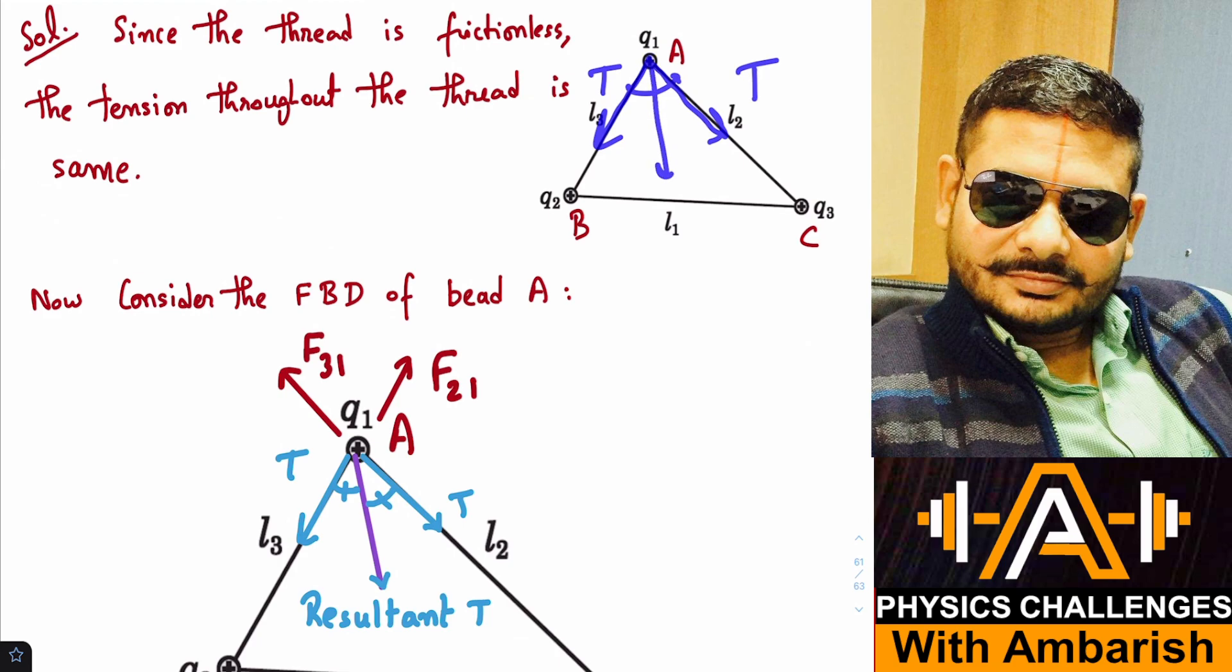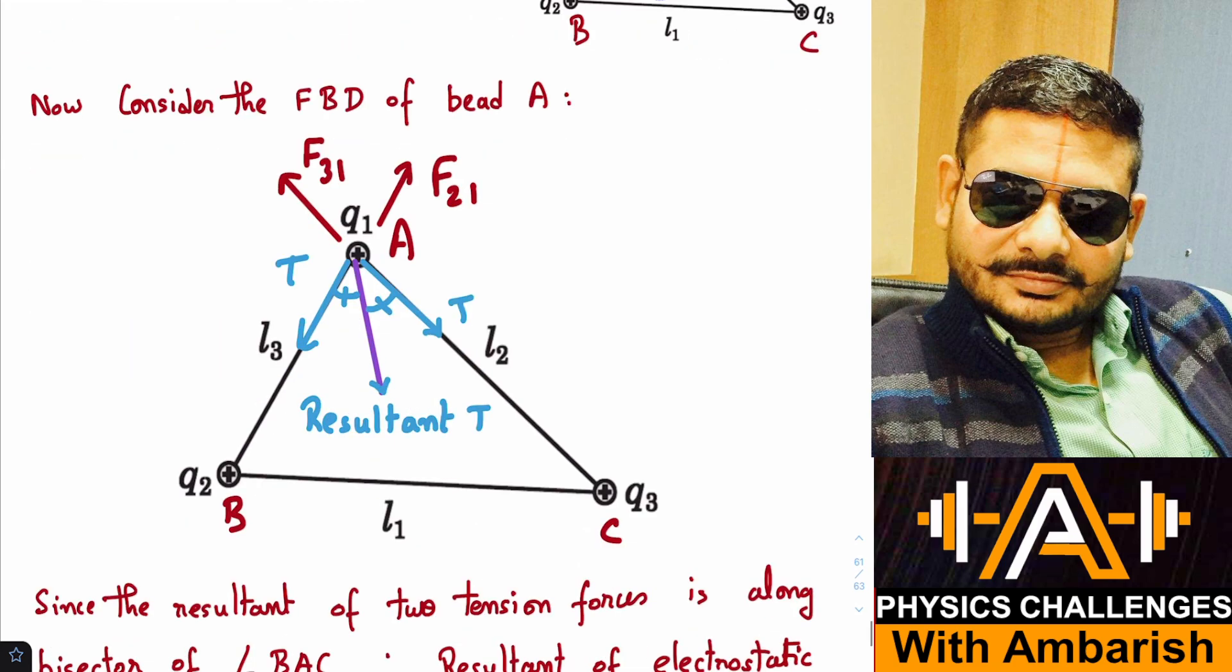So therefore resultant tension is acting along the bisector. So that's what I've shown here. So T, T, the resultant is along the bisector. And therefore to cancel this, since bead is in equilibrium, so to cancel this, the electrostatic force must also be along the bisector in the reverse direction, right?